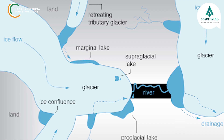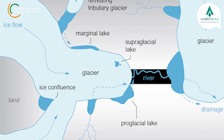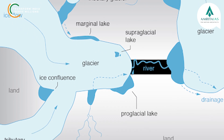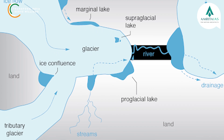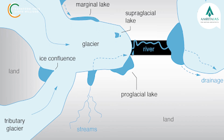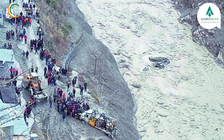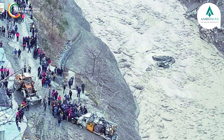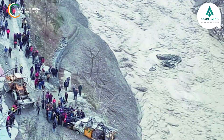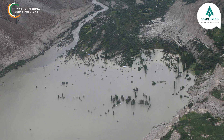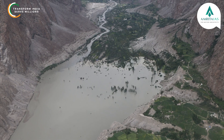Flash floods caused by the outburst of glacial lakes, called Glacial Lake Outburst Floods (GLOF), are well known in the Himalayas, where such lakes have often been formed by landslides. These floods have immense potential for flooding in downstream areas, causing disastrous consequences due to the release of large volumes of water in a very short interval of time.